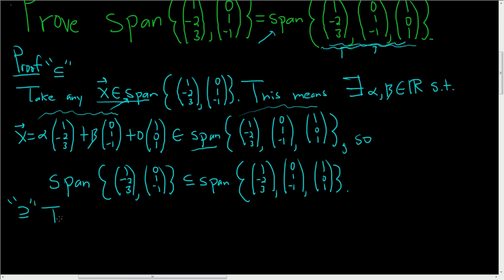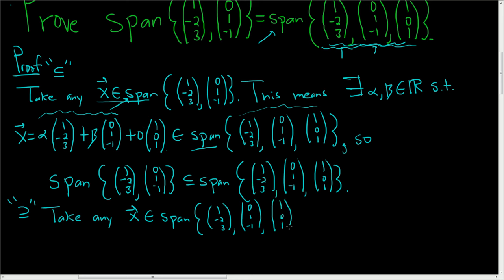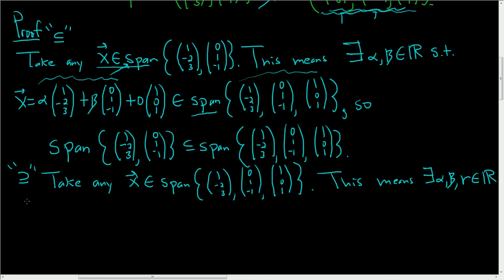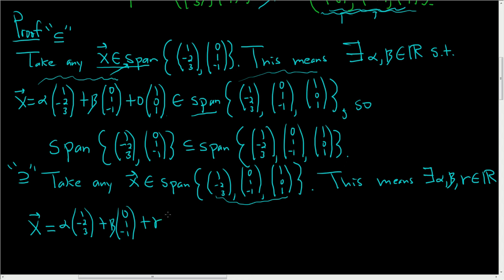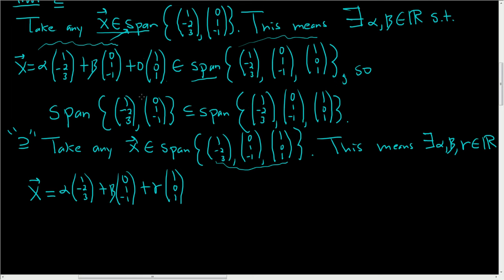Now we'll show the other inclusion. We take any vector x in the span of (1, -2, 3), (0, 1, -1), and (1, 0, 1). This means there exist alpha, beta, and gamma in R such that x is a linear combination of those vectors: x equals alpha times (1, -2, 3) plus beta times (0, 1, -1) plus gamma times (1, 0, 1). This is indeed the hard direction — we have to show that x is a linear combination of only the first two vectors.